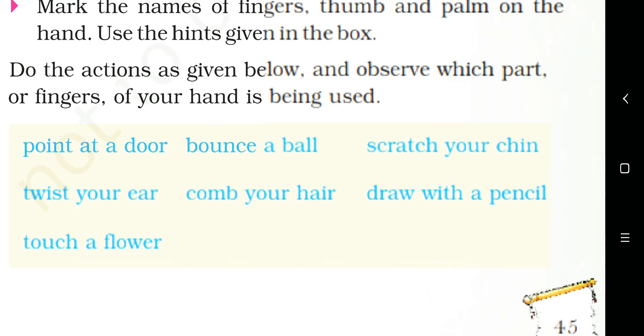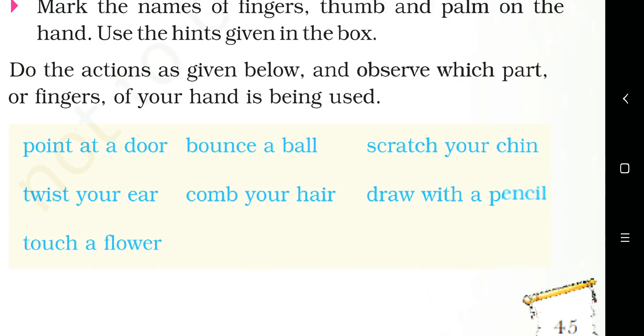Next is bounce a ball. So suppose we are bouncing a basketball, I use my palms and I think all of my fingers - the forefinger, the middle finger, the ring finger, the small finger, as well as the thumb, along with the palm. So I think I use all the parts of my hands.